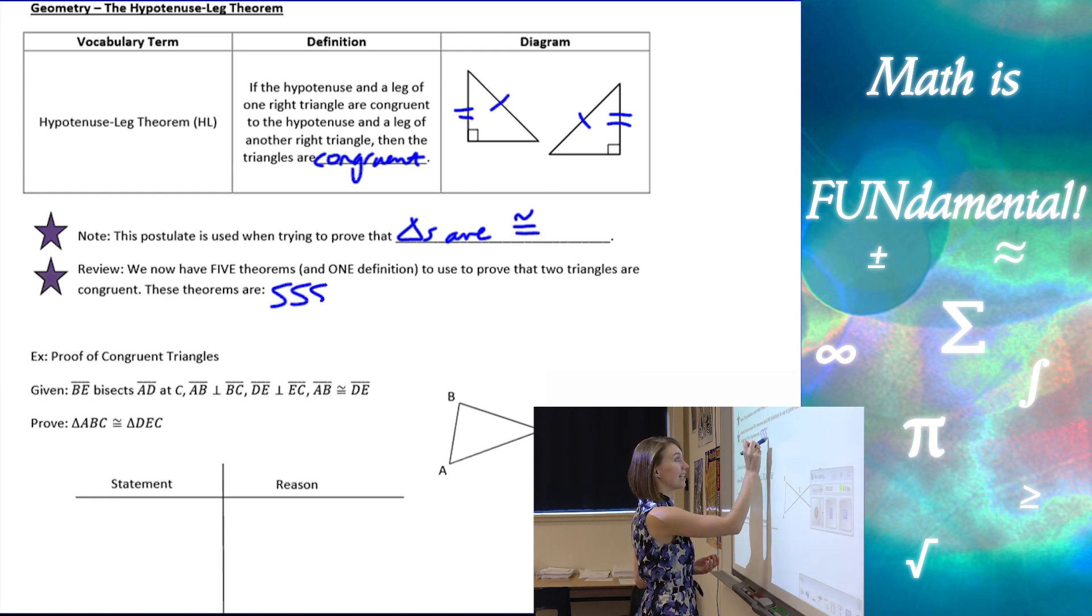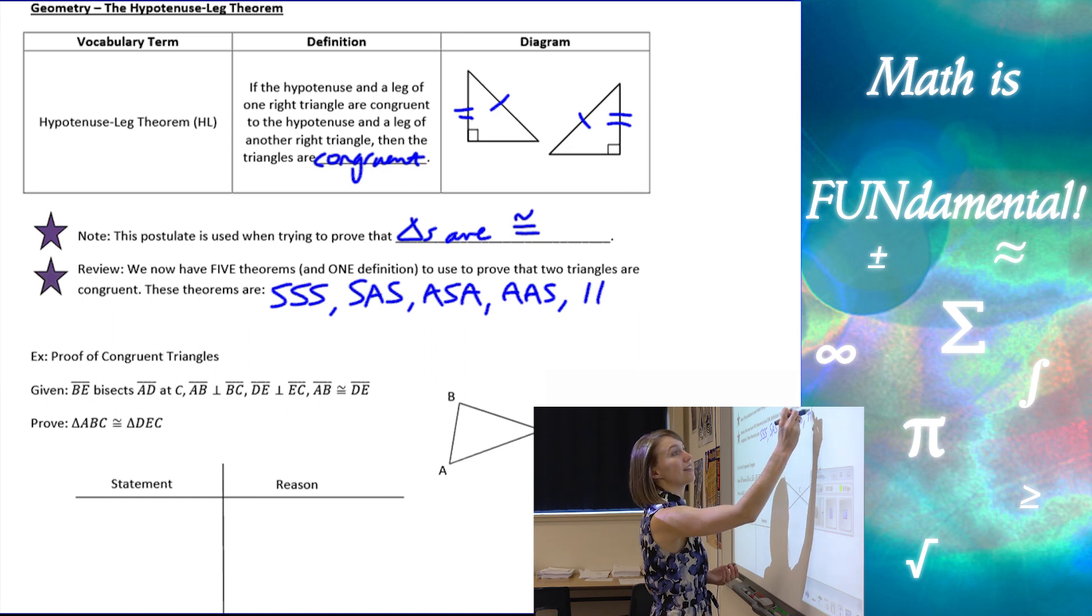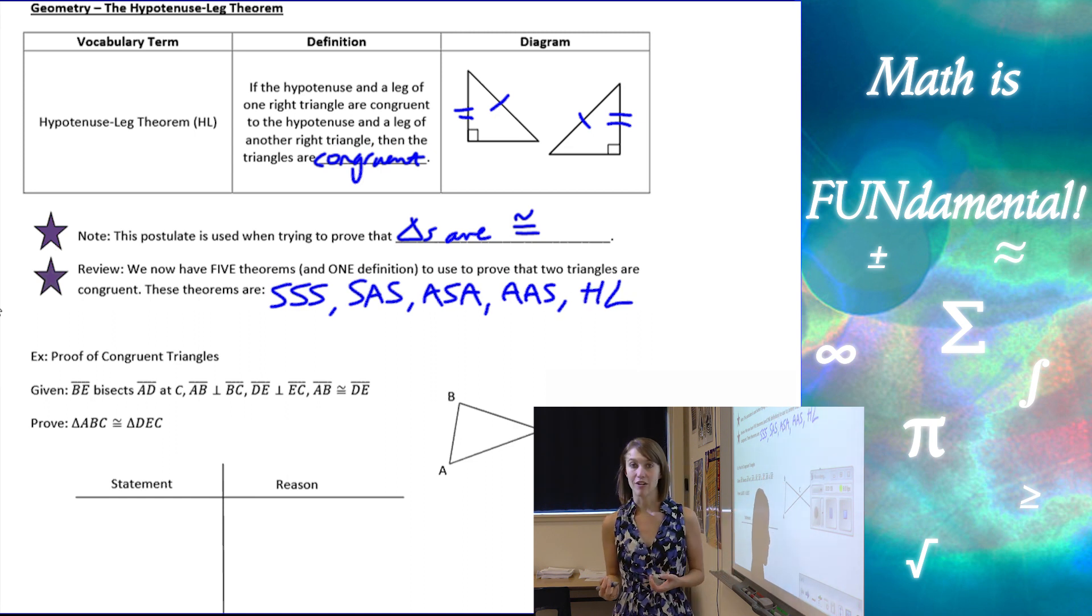We have side, side, side, side angle side, angle side angle, angle angle side, and now the hypotenuse leg theorem.